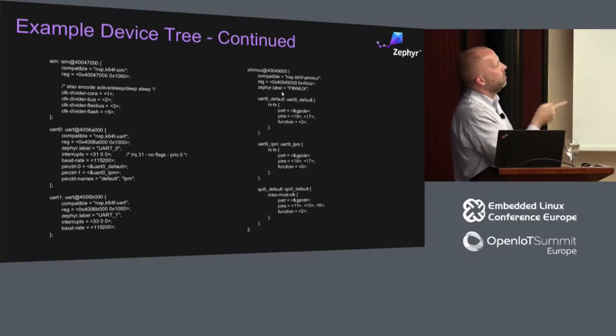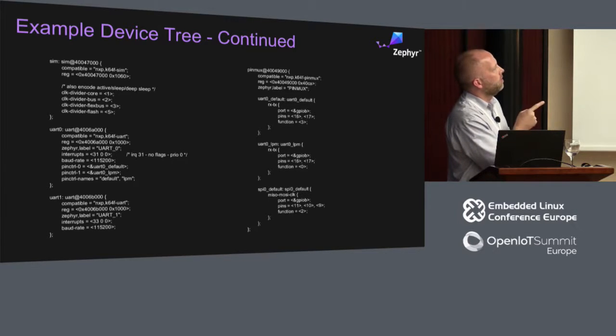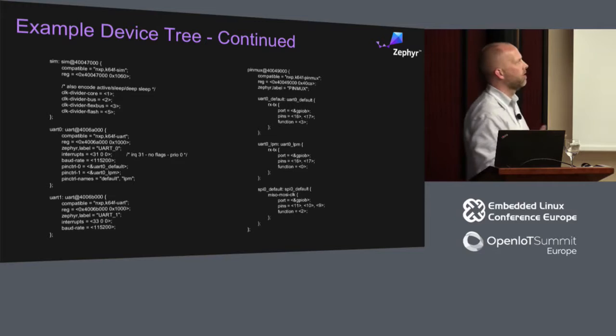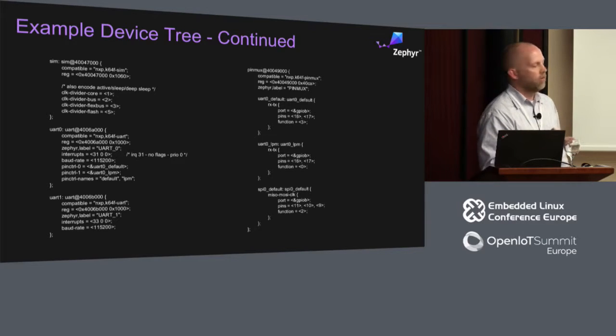I'm going to skip UART1 because it's basically just like UART0 — I was too lazy to enumerate the pins on that. Let's go to the pin mux device, which is the node in the system that controls pin muxing. I defined the different pin sets here for at least the things used in this file. You'll see a UART0 default, a port which points to the GPIO port these pins sit off of — on this board there are about five or six GPIOs. Then pins 16 and 17, and a function which denotes what function you want to set in the pin mux. There may be up to five or six different functions for a pin.